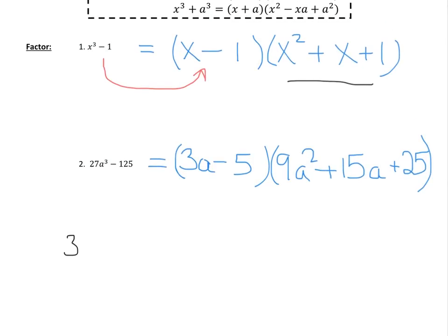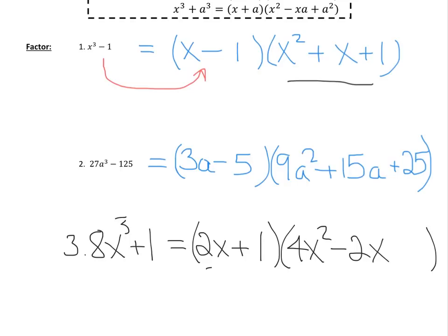So let's do a number 3, and let's do 8x cubed plus 1. So again, we're going to have our binomial. Take the cube root of the first term is 2x. Take the cube root of the second term, which is 1. The sign follows. The sign is the same in the binomial. And then in the trinomial, we're going to square the first term, so we're going to get 4x squared. It's going to be the opposite sign, so here it's negative. Multiply the two together, we get 2x. And we're going to square the last term, so we get a plus 1.